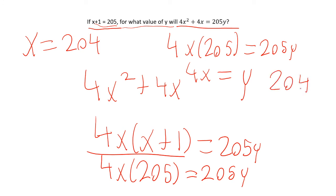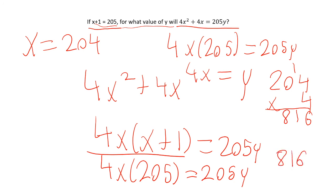Now we substitute x as 204: y equals 4 times 204. 4 times 4 is 16, 0 times 4 is 0, 2 times 4 is 8. We get 816 as our final answer.